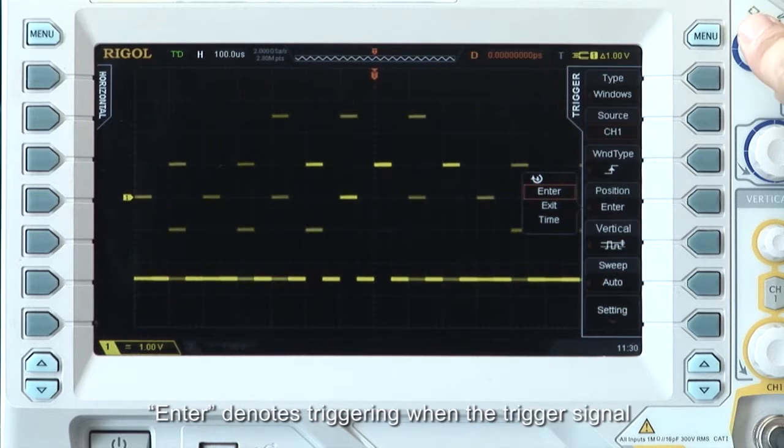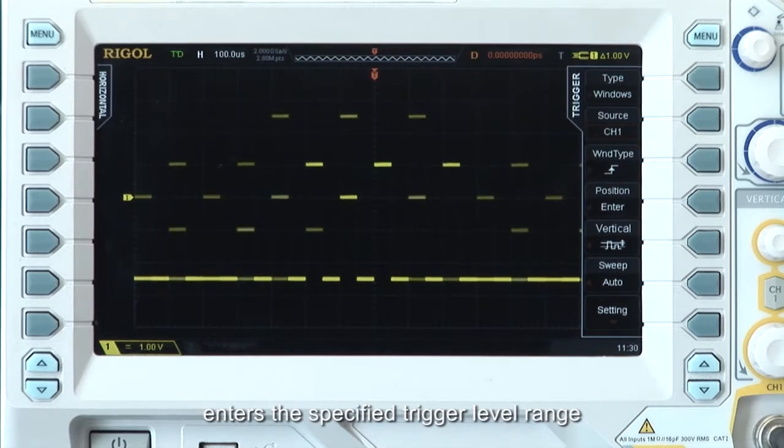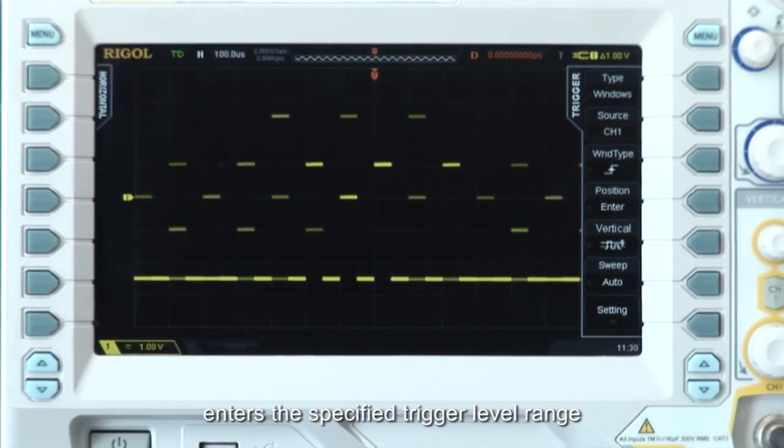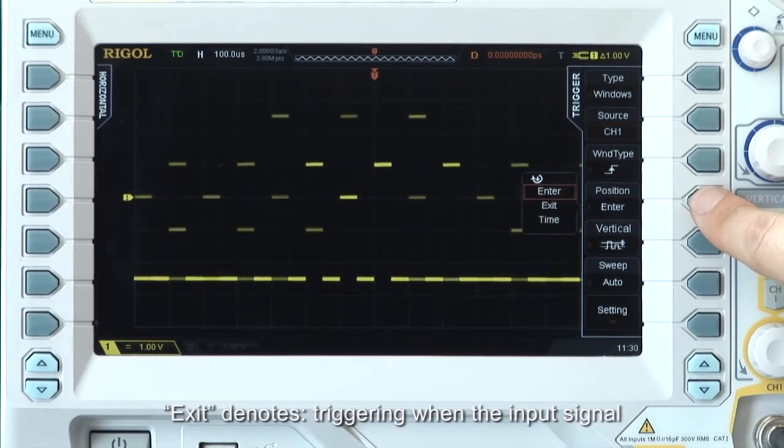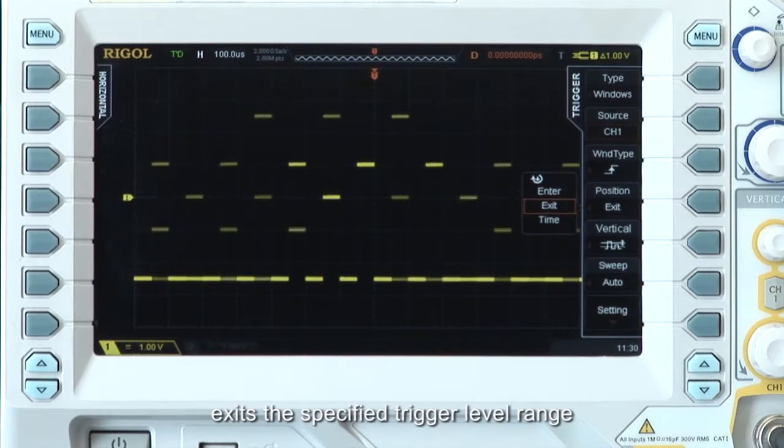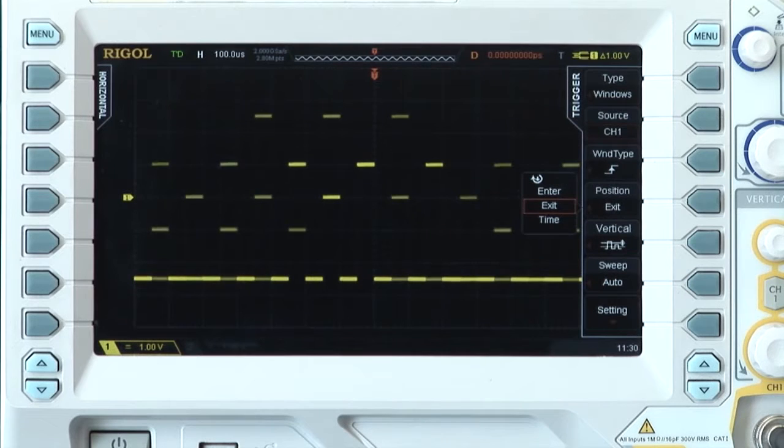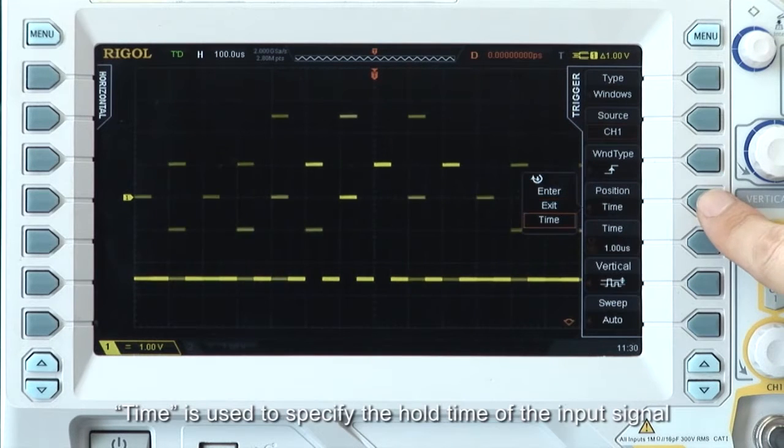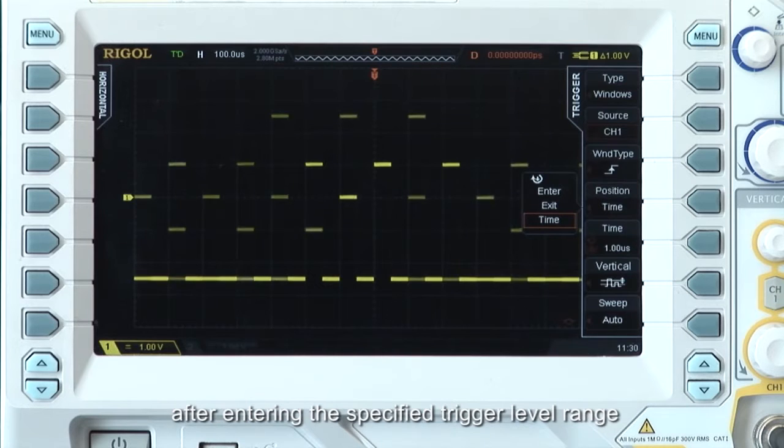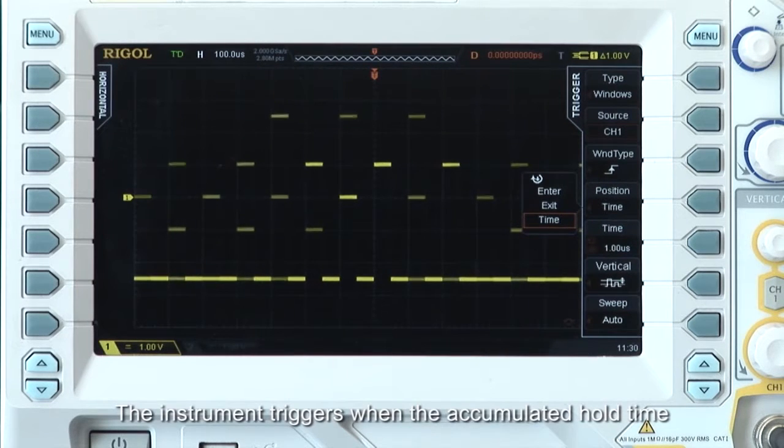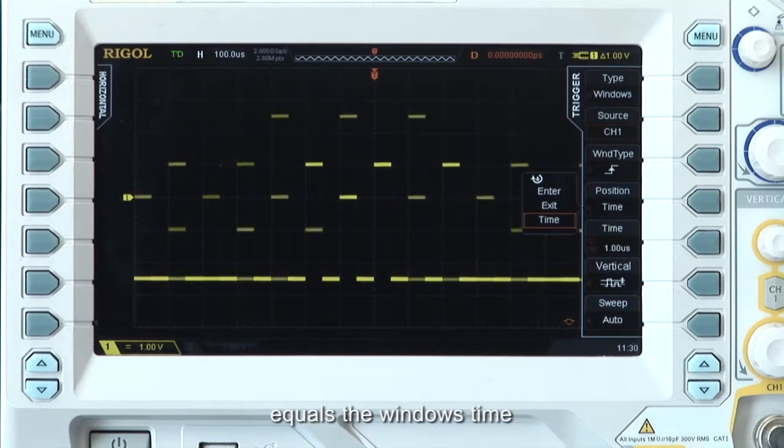Enter denotes triggering when the trigger signal enters the specified trigger level range. Exit denotes triggering when the input signal exits the specified trigger level range. Time is used to specify the hold time of the input signal after entering the specified trigger level range. The instrument triggers when the accumulated hold time equals the window's time.